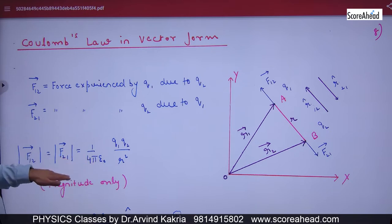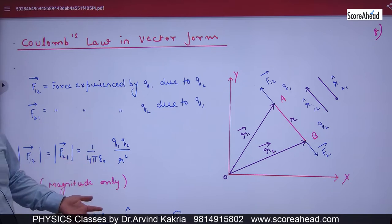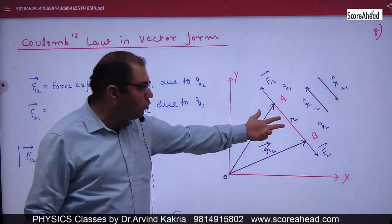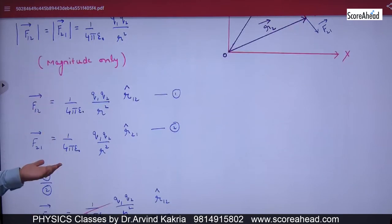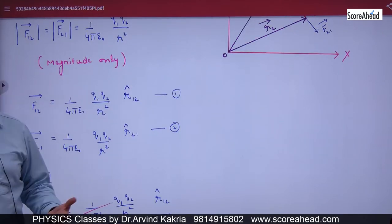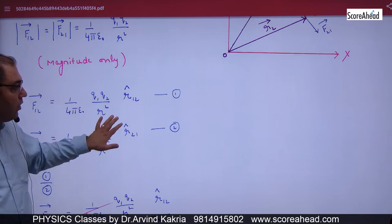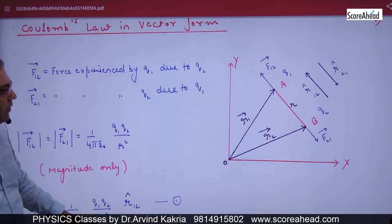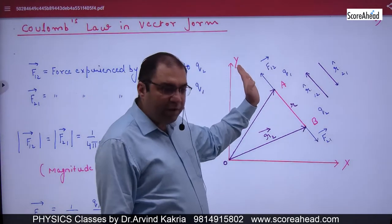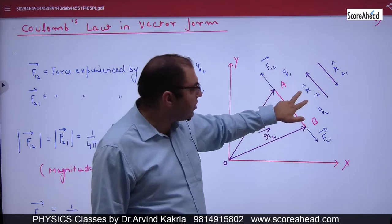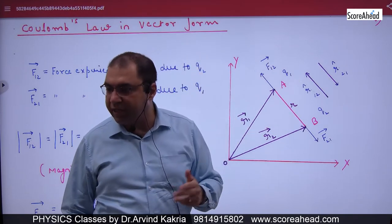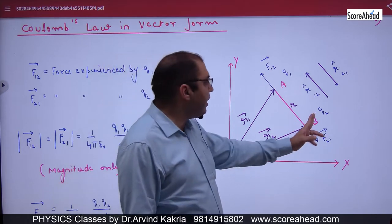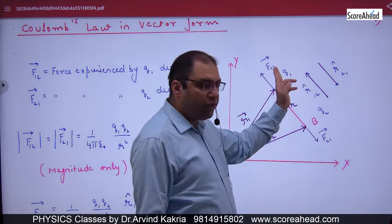The magnitude is 1 over 4π epsilon times Q1 Q2 over R squared. But if you want to write it in vector form, you need to represent the direction as well. For F12 vector, we introduce a small unit vector called R12 cap to represent the direction.